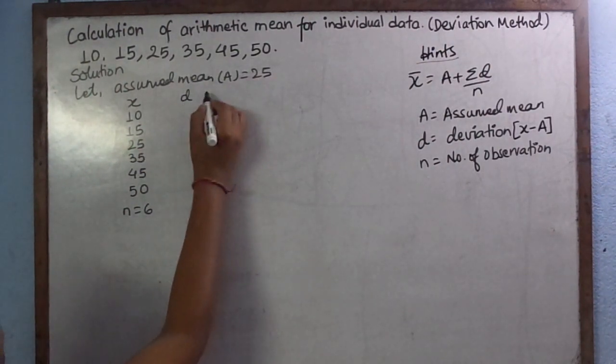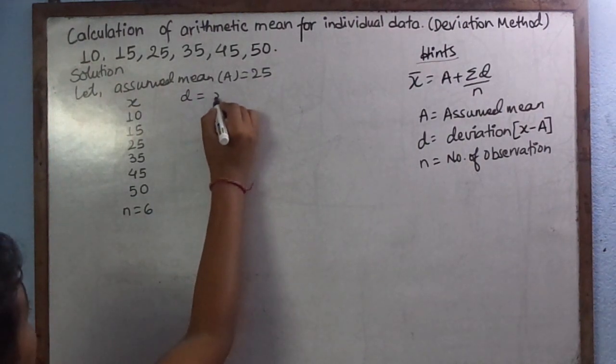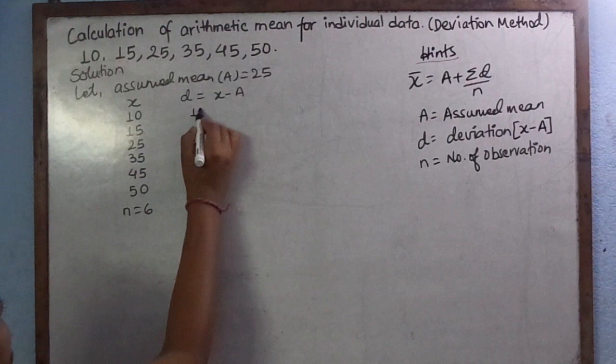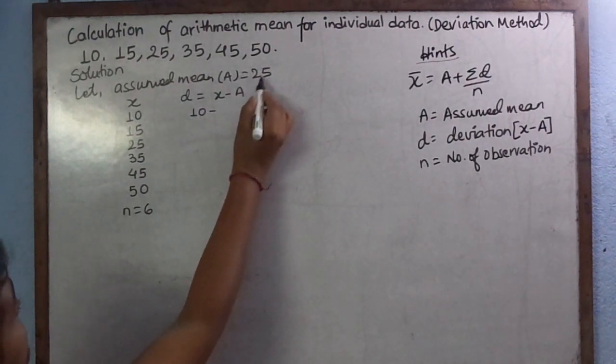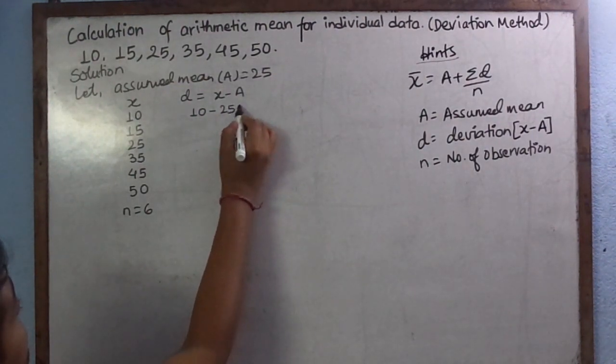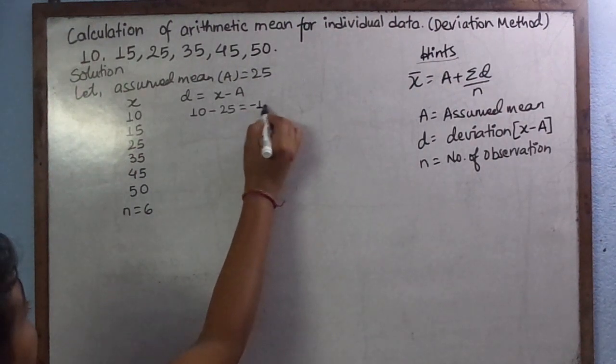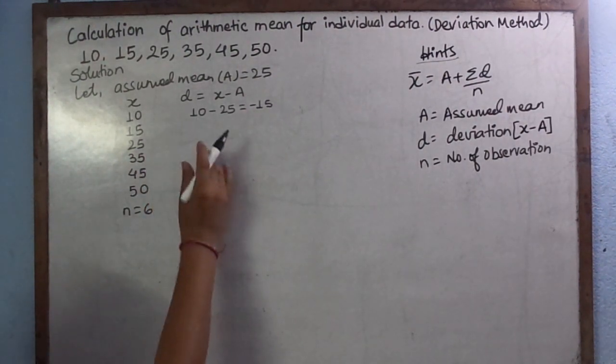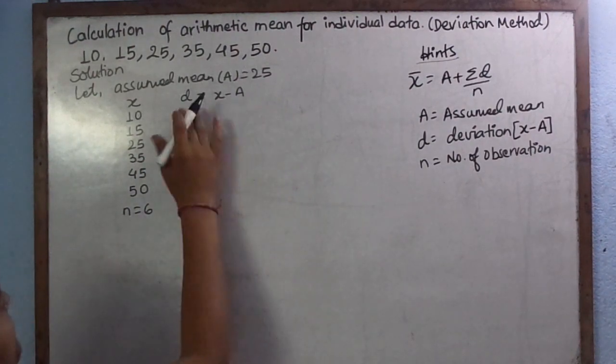And we need to find deviation. Deviation equals to X minus A. X means given number of observation 10, minus A means assumed mean, it is 25. 10 minus 25 equals to minus 15. In this way we have to find deviation. We will write it directly.